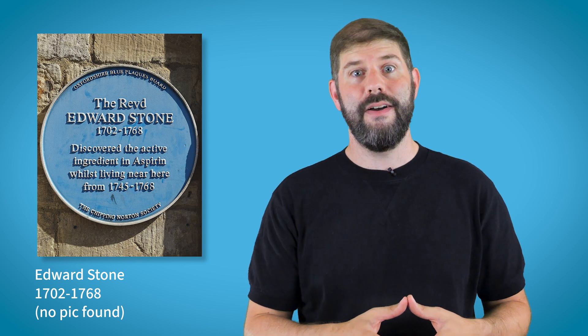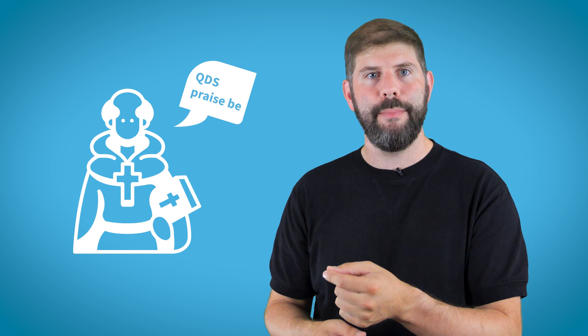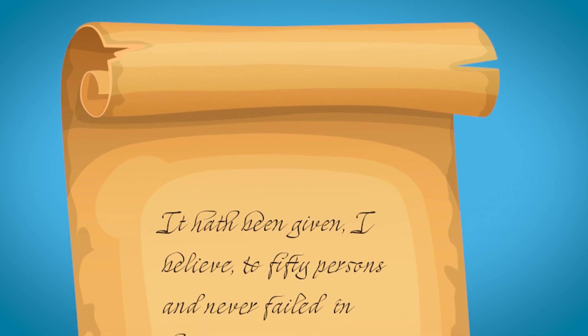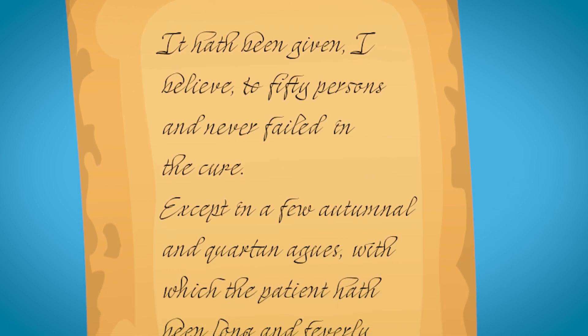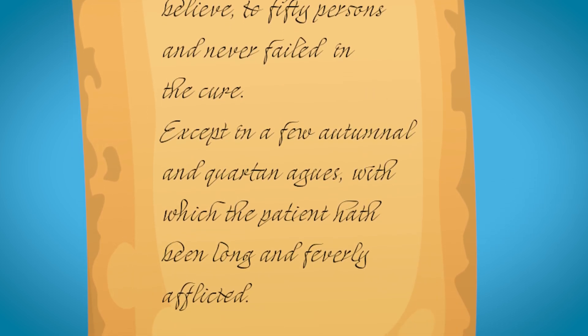But we now need to turn this tree into this drug and that starts in the 18th century. Reverend Edward Stone from Chipping Norton used willow bark extracts to treat pain but did it in a very scientific way, giving it every four hours and monitoring what happened. He left the bark on a baker's oven for three months and then pounded it into powder. He reported it hath been given to 50 persons and never failed in the cure except in a few autumnal and quotidian agues with which the patient have been long and severely afflicted. This kind of scientific rigor leads you down a path for others to start to extract the active ingredient, and in the 1820s two Italian pharmacists and a German pharmacologist did just that. This ingredient was called salicin, named after Salix the genus of the willow tree. Over time scientists refined that to salicylic acid.